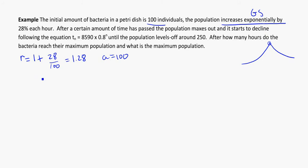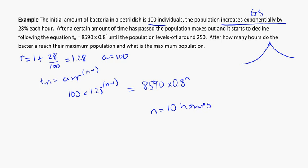Writing the equation for the first one, if I have Tn equals a times r to the n minus 1, here I'm going to have 100 times 1.28 to the n minus 1, and I will set it equal to 8590 times 0.8 to the power of n. Like we've done before, we're looking to see where these two things are equal to each other, so put it straight into solver. And again, similar to before, we're going to get a number very close to 10, so I'm going to say and round it that n is equal to 10. So after 10 hours, the population has maxed out and begins to decline.